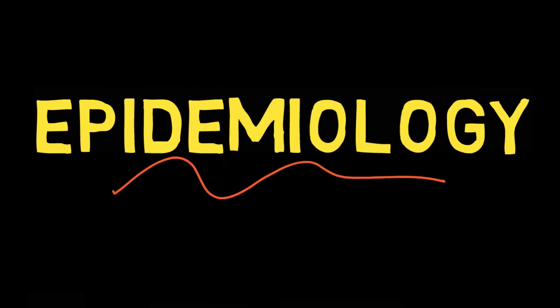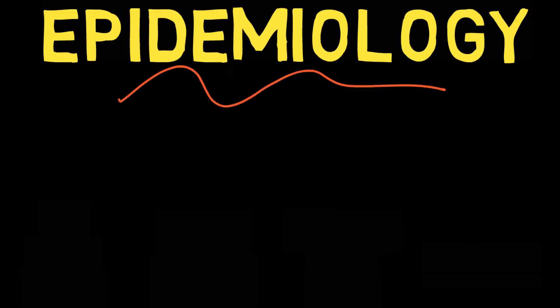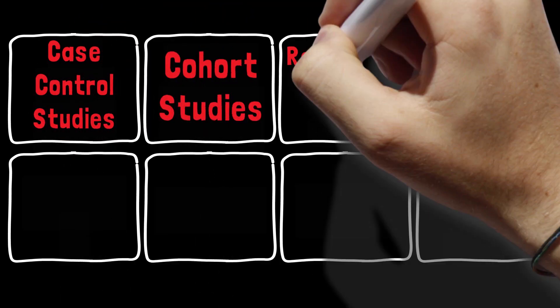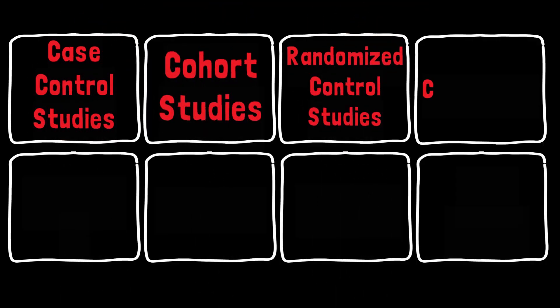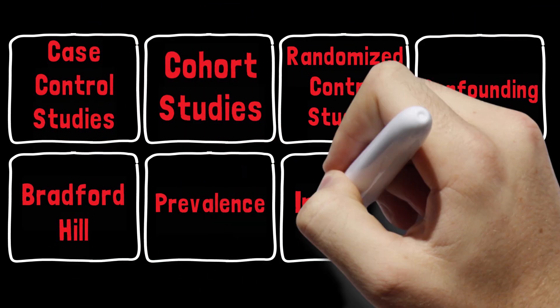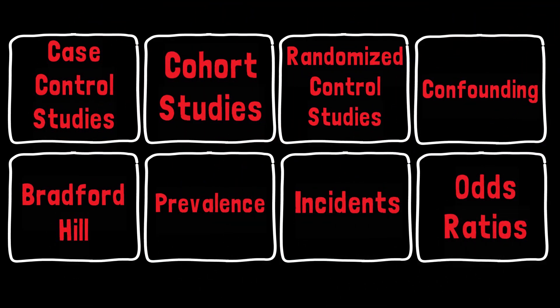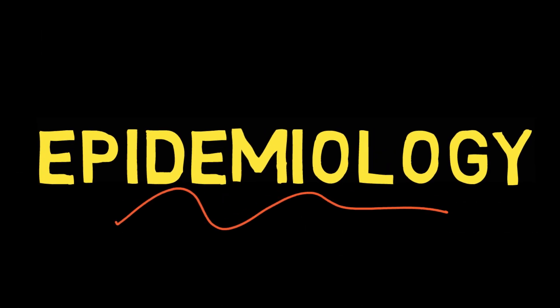Let's talk about epidemiology. This is the first in a series of videos and I'm going to cover what epidemiology is. We're going to talk about case control studies, cohort studies, randomized control studies, confounding, Bradford Hill, incidence, odds ratios, et cetera — so there's a lot to learn. But in this video, I'm just going to cover what epidemiology is, and understanding that will help you understand everything else in the next couple of videos.